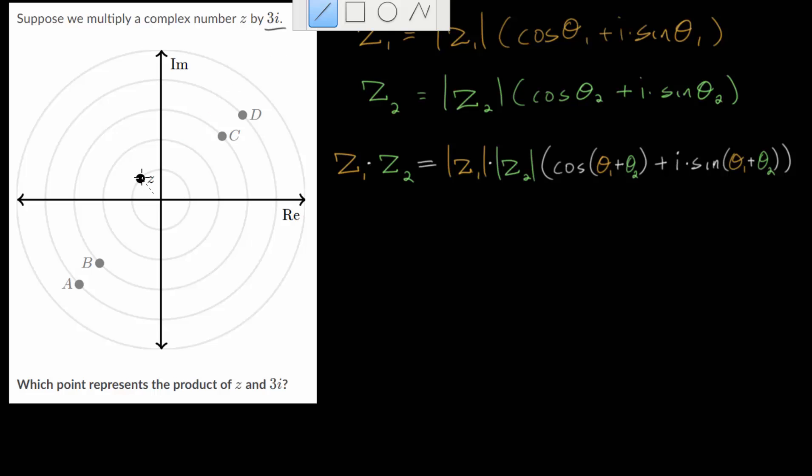Let's start by determining the angle and the magnitude for z. If we draw a line to the origin notice that we are on this first ring meaning that the magnitude is 1. This angle here, well it's bigger than 90 degrees because that would take us to the imaginary axis here.